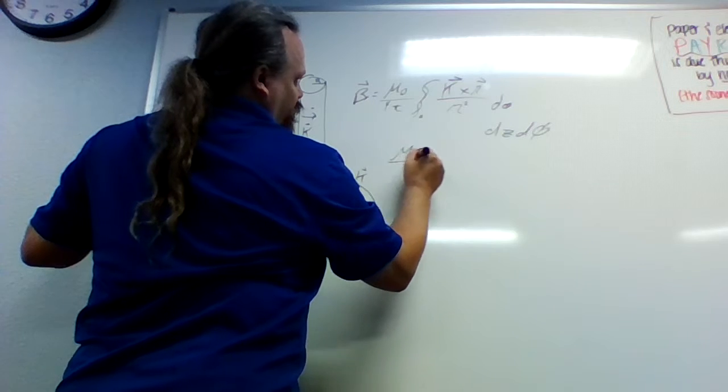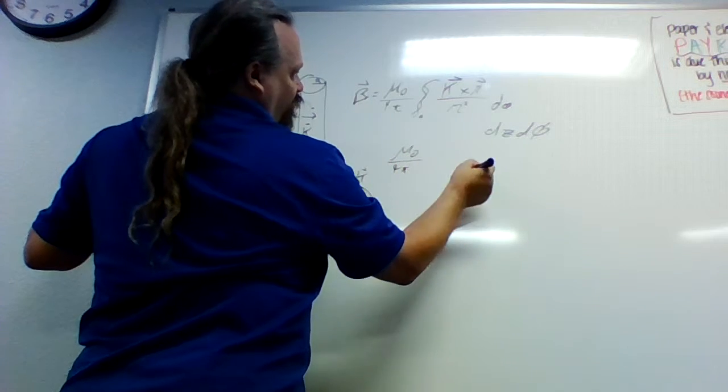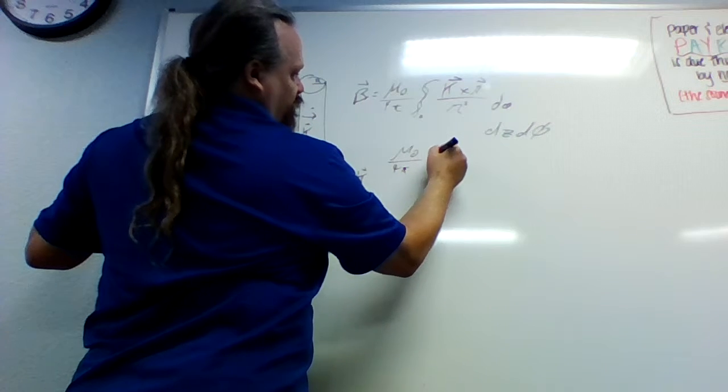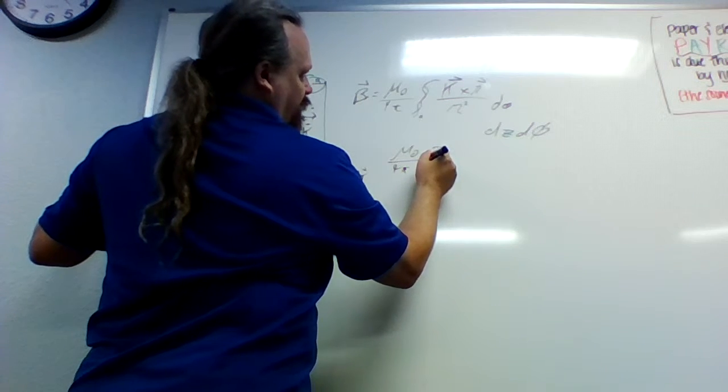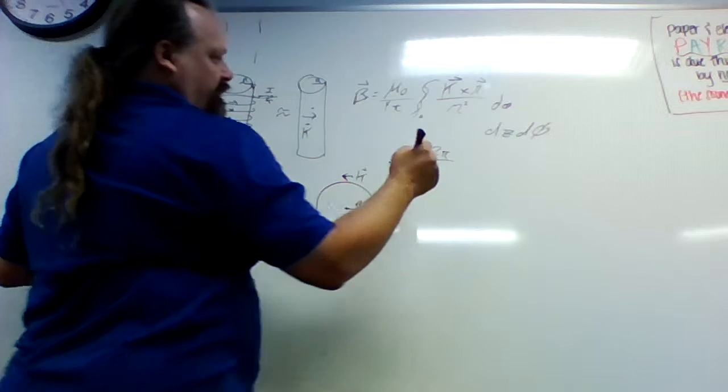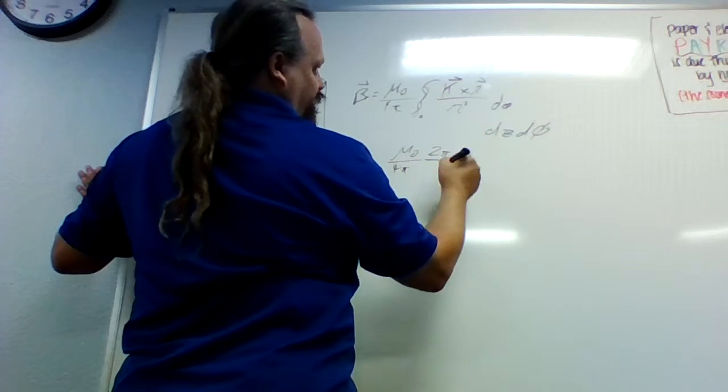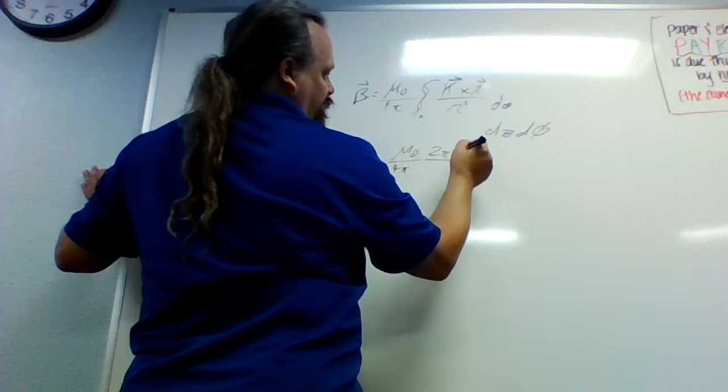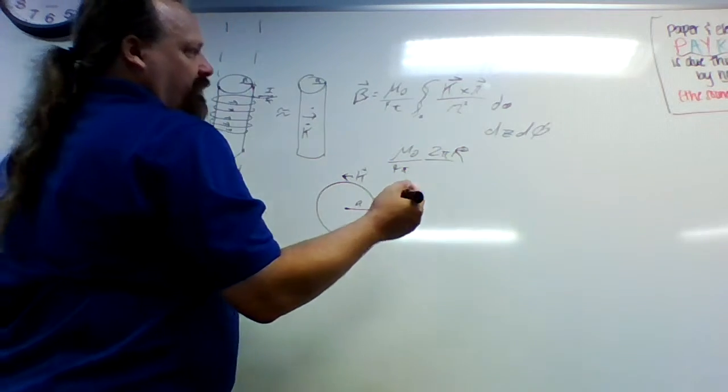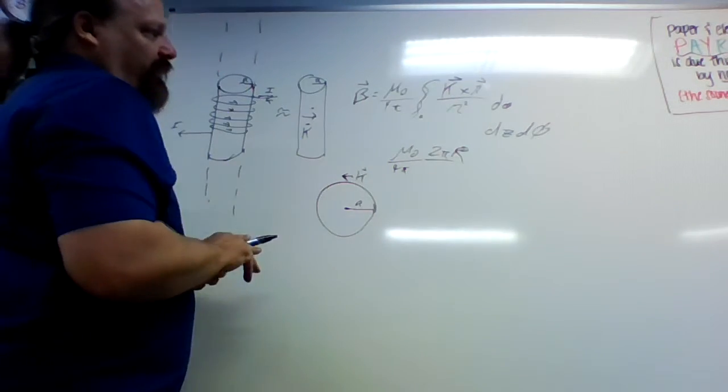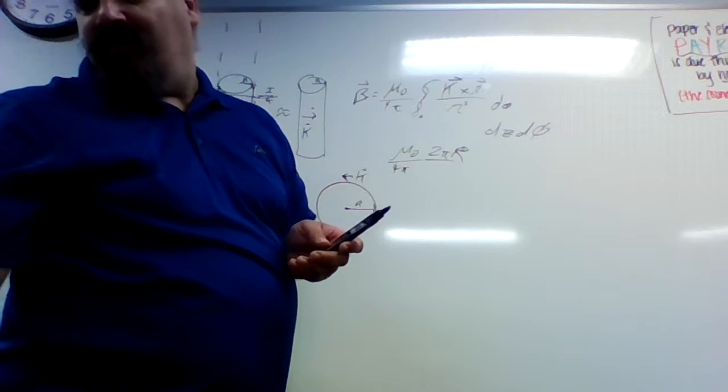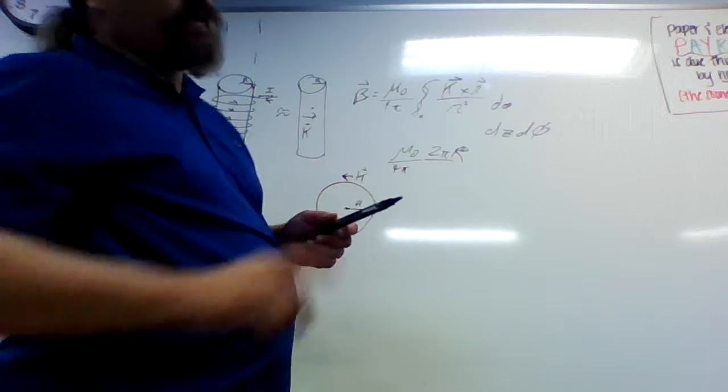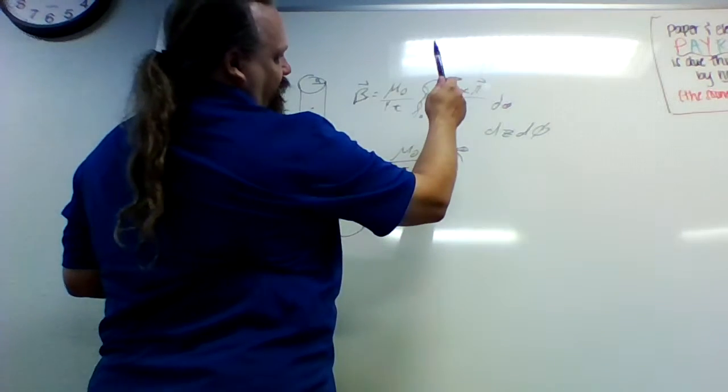And so that's just going to be mu naught over 4 pi. And we're going around the circle, so that's from 0 to 2 pi. And then we have the radius r for how far we went around the circle.